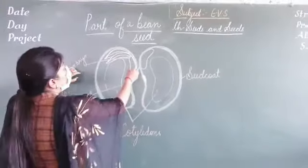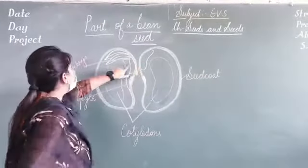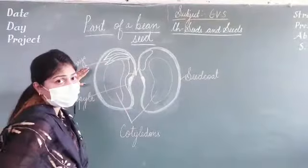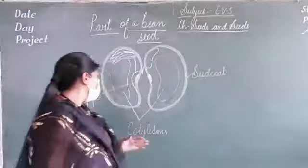There is a leaf-like structure inside the seed that is known as the embryo of the seed. The embryo grows into a new plant or an adult plant.